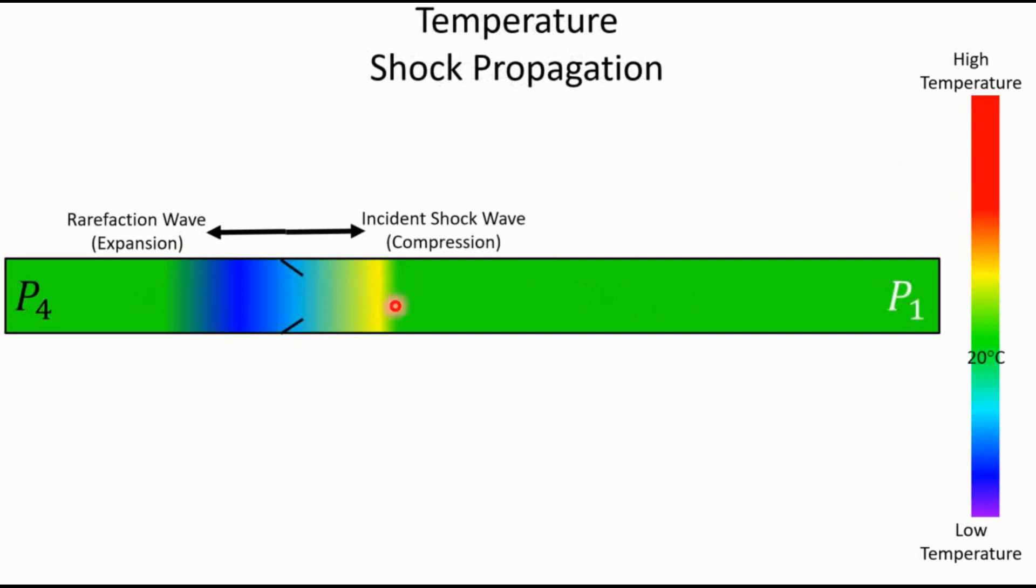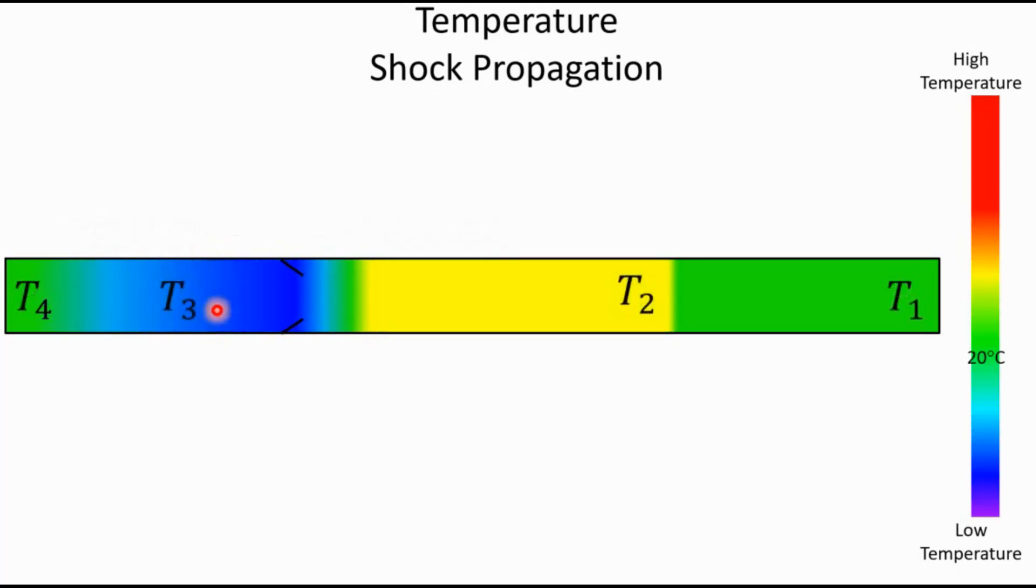And you'll notice that the gas that was just shocked and is in state 2 here in the yellow has increased in temperature. The gas that is expanding back into the driver is actually decreasing in temperature a little bit because it's expanding. Rapid expansion causes a drop in temperature. So we move that shock a little bit further down the tube, and then you have those temperatures at state 1, 2, 3, and 4 again.